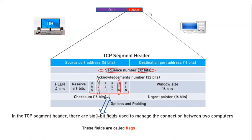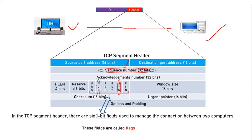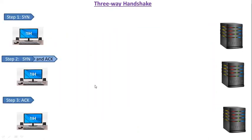In this TCP segment, we have many important fields, but for our discussion the sequence number field, the SYN (synchronize) field, and the ACK (acknowledgement) field are important. In the TCP segment header, there are six one-bit fields which are used to manage the connection between two nodes. These six one-bit fields are also known as flags. Now let's move to the specific topic of three-way handshake.